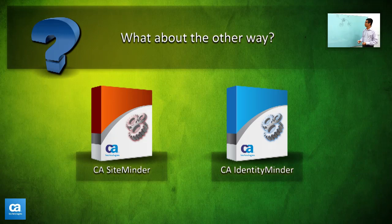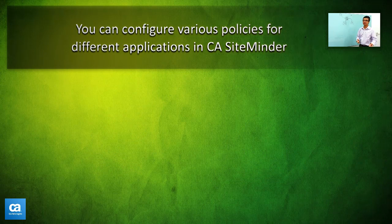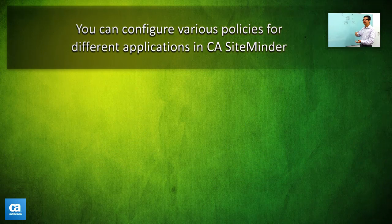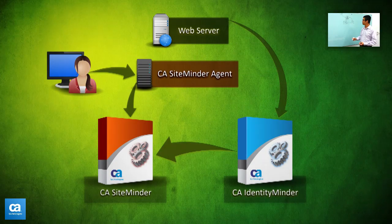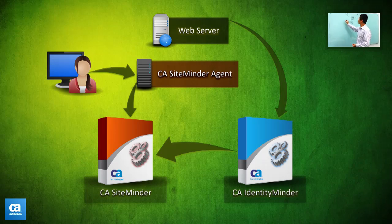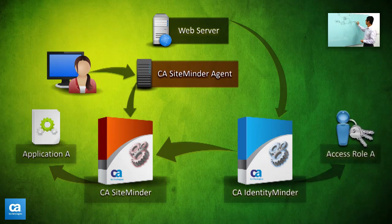So that's how SiteMinder can help Identity Minder. What about the other way? In SiteMinder you can configure various policies for different applications. One of the things you can do is configure those policies based on access roles in Identity Minder. So Identity Minder can supply SiteMinder with various access role policies. In SiteMinder, we can then use those access roles to protect Application A — users are only allowed into Application A if they have those access roles, which are defined and managed in Identity Minder.